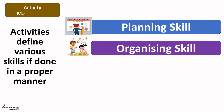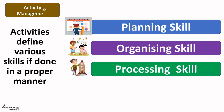The second skill the child will develop through such activities is organizing skill. Organizing skill is another important skill in professional life — and not only in professional life but in personal life also. If things are not organized well then we are not as effective as we should be. The third skill is the processing skill. While we try to get a piece of work done, whether in professional or personal life, processing that job is very important.